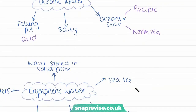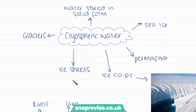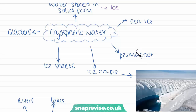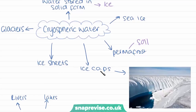The next store of water we have is cryospheric water. Cryospheric water is water that is stored on Earth in solid form — the solid version of water is ice. The stores of cryospheric water we have on Earth include things like sea ice, permafrost, which is an area of land where water is frozen into the soil. Also stored in the ice caps, ice sheets and glaciers. This photograph shows you how large ice sheets and ice caps can be, and all of this is a store of water.